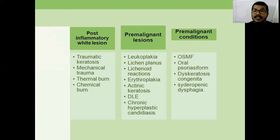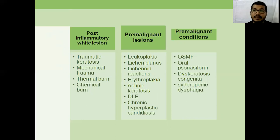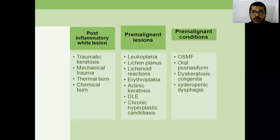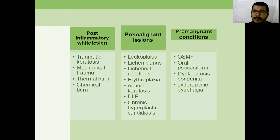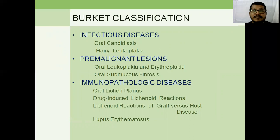Another category is pre-malignant lesions and conditions. Pre-malignant lesions are lesions in which cancer is more likely to occur, while pre-malignant conditions refer to a generalized state of disease. Examples of pre-malignant lesions include dyskeratosis. This is covered under the Burger classification, which is a straightforward and easy classification system.